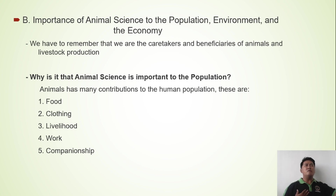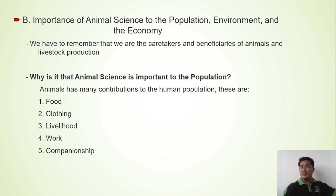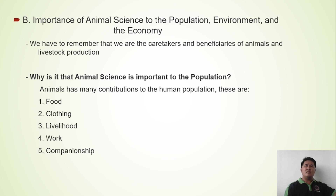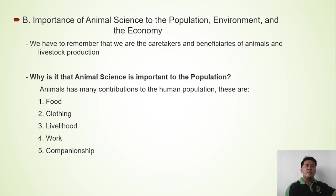Livelihood means the animals give us something in return in terms of money. Usually we take care of animals because we can get money from them. For example, if your parents have no money to give you allowance for the next week, they can sell a chicken from the backyard. That is livelihood — the animals are giving you money for a certain purpose.